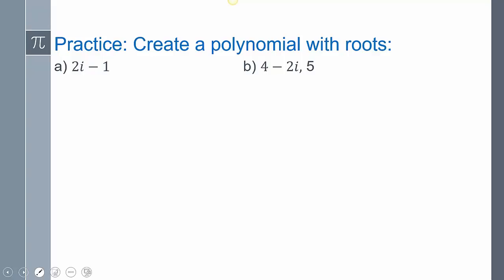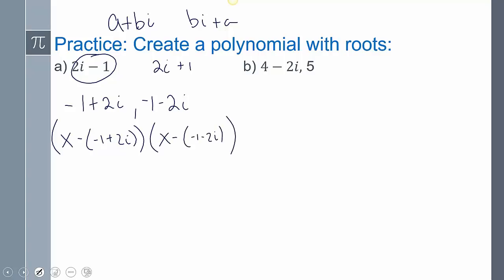So I kind of tricked you here. If you look at this first one, you probably set things up. You probably wrote, oh, I have the conjugate 2i + 1. That's actually wrong. That is not the conjugate. If you remember, we said it has to be in the form a + bi. That is not in the form a + bi. That is in the form bi + a. You have to switch them. I have to rewrite this as -1 + 2i. Now my conjugate is going to be -1 - 2i. And so you can set this up. x minus your zero, x minus your zero. And then there you have your answer.